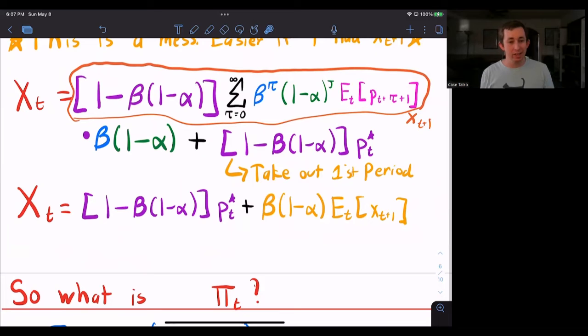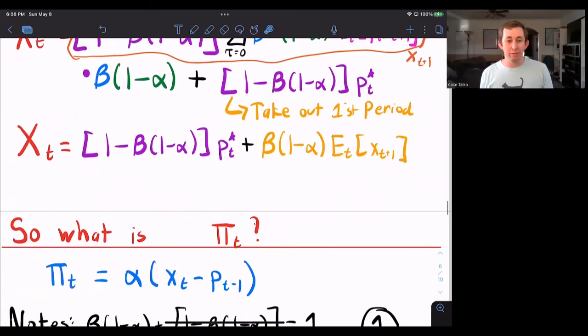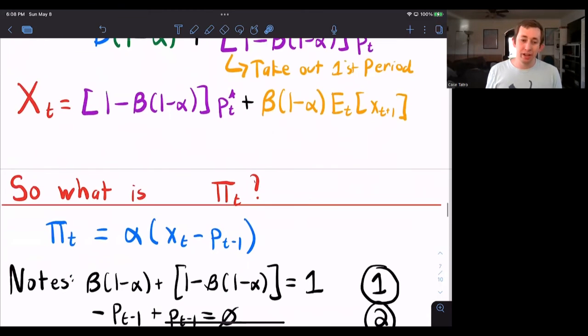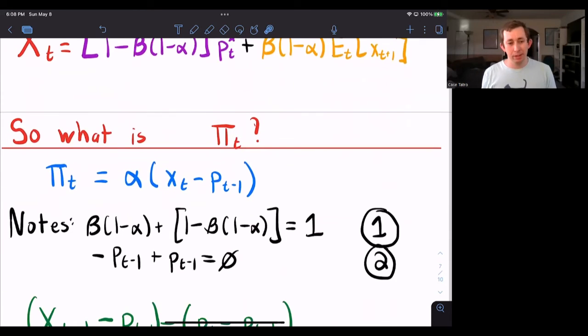So now my optimal price today is just a function of my expected optimal price tomorrow. All right, well, let's keep that and let's think about what inflation is today. We know that inflation is alpha times X of T minus last period's price level from before.